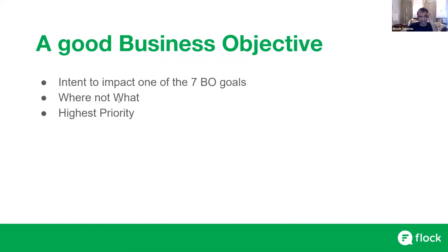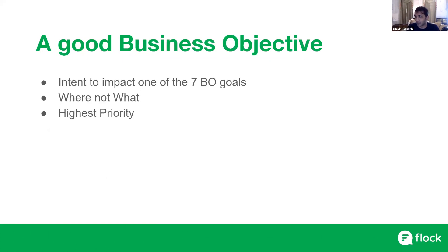The second rule is the most common mistake I've seen in some of the departments that are still maturing in the OKR process, which is that an objective is answering the question of where we want to go, not what we are doing to get there. A lot of people end up writing objectives which are more like initiatives — that is, what are we doing to get there — not where we want to go. This is the second important aspect of a good business objective.